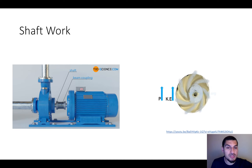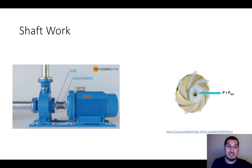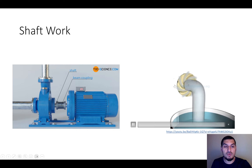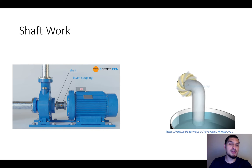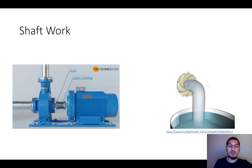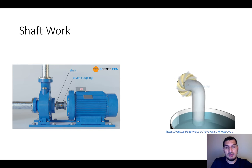This increases the kinetic energy and the pressure, giving the fluid enough energy to increase velocity and pressure so it can reach higher elevation. This is a simple example of shaft work. Here the shaft rotates and provides energy to the fluid through the impeller. Another example is a piston in a cylinder with two openings — it sucks fluid from one opening and pushes it through the other. At the end of the day, there is some sort of shaft providing energy to the fluid.